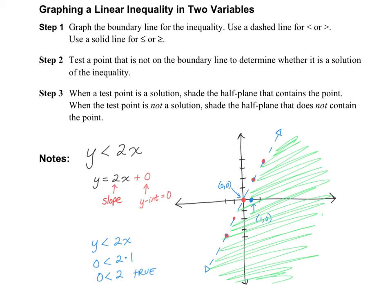This line divided the graph into two half-planes. The shaded half-plane is the solution; the other half-plane is not a solution. Remember that the graph continues to go on forever in all directions, meaning there are an infinite number of solution points. Some example solutions are (1, 0), (3, 0), and (1, -4).